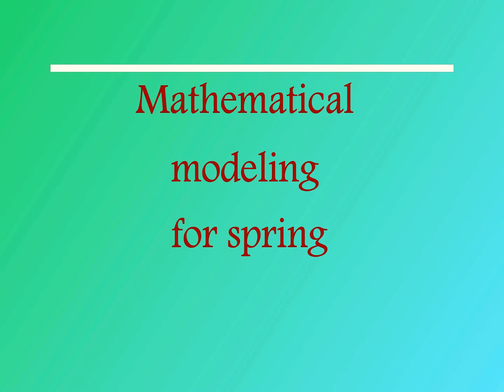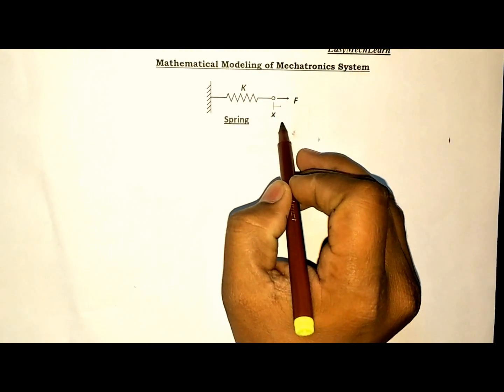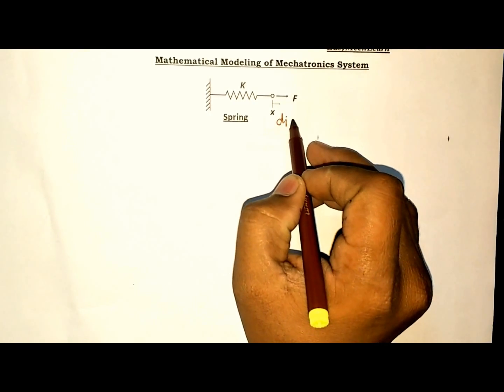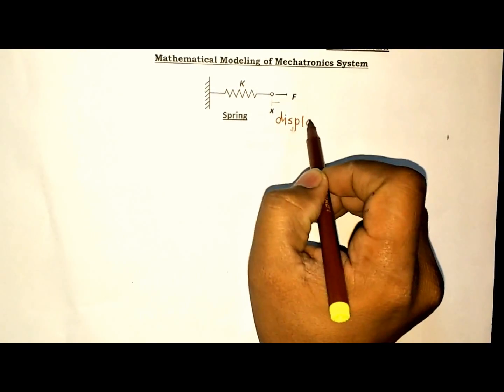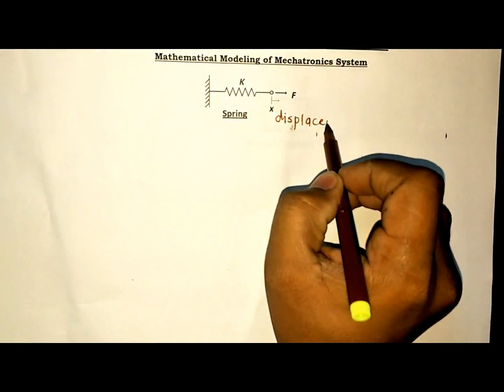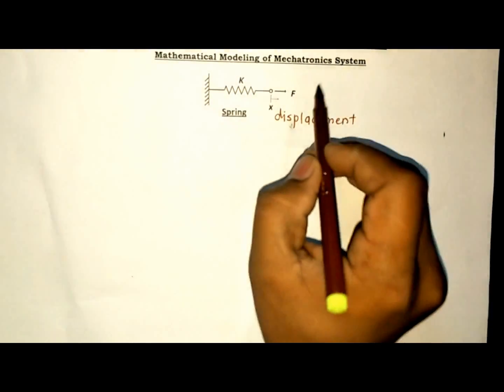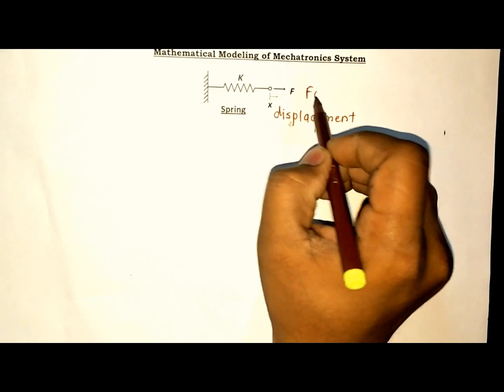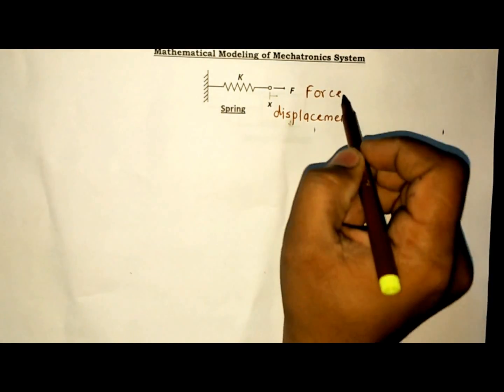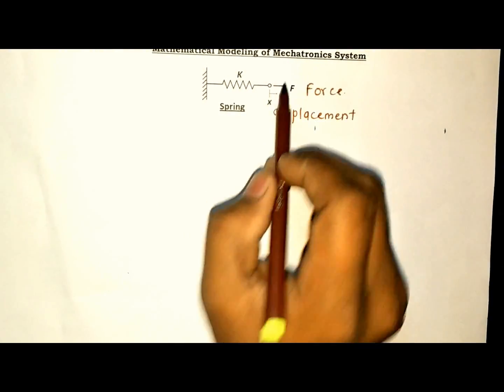Let us start with mathematical modeling for a spring. This is a spring which is fixed or connected at one end. X is the displacement of the spring. F is the force acting on the spring. K is the stiffness of the spring.